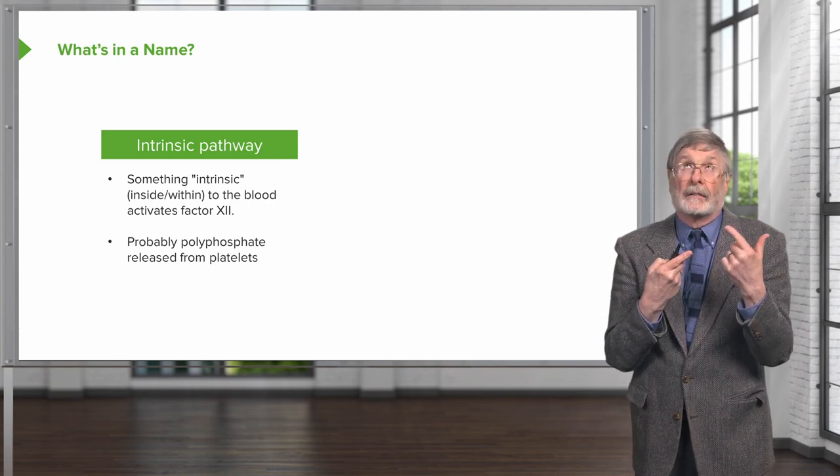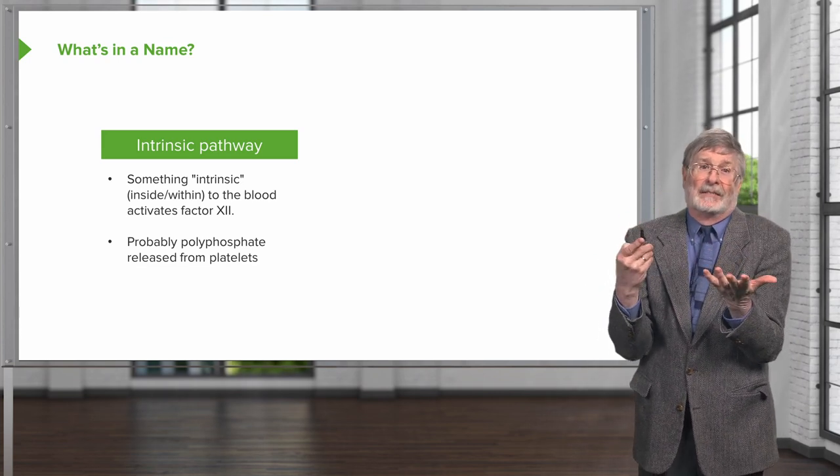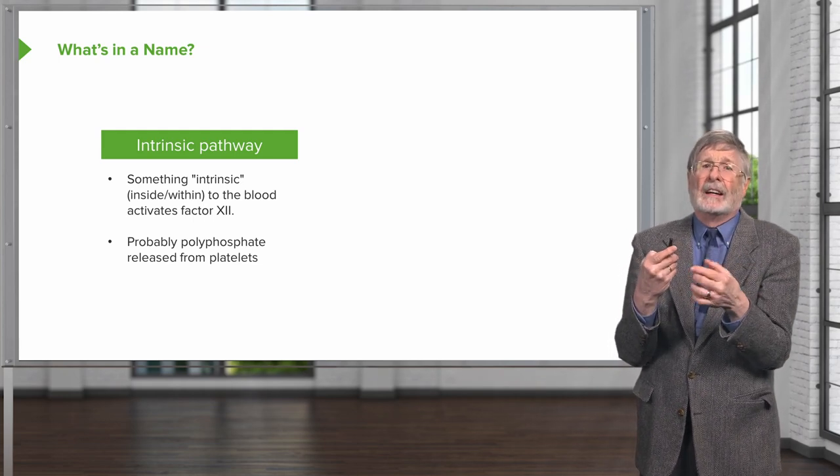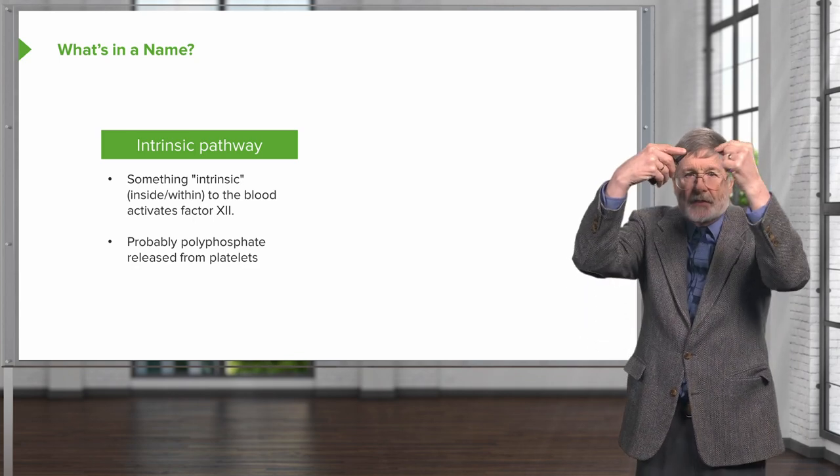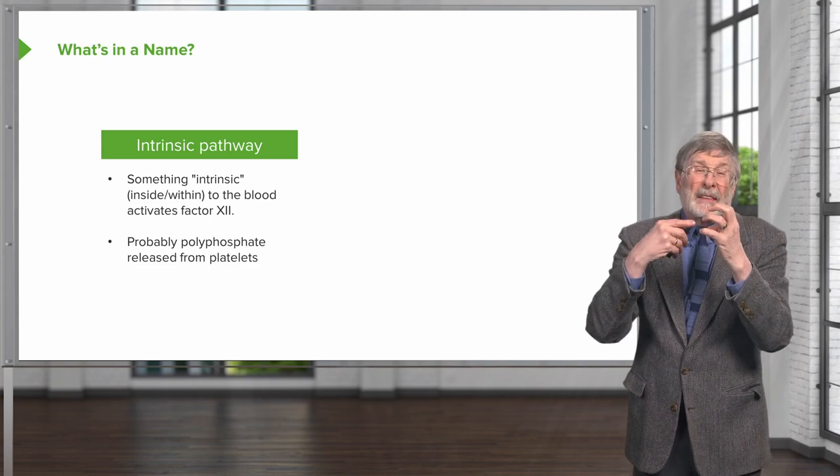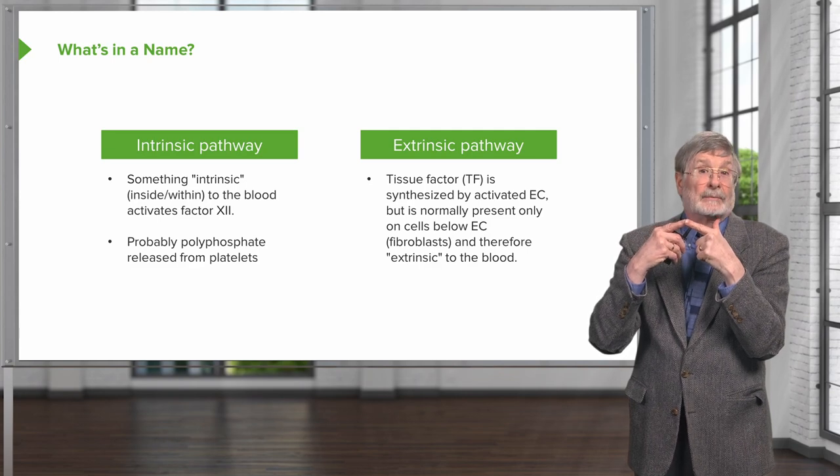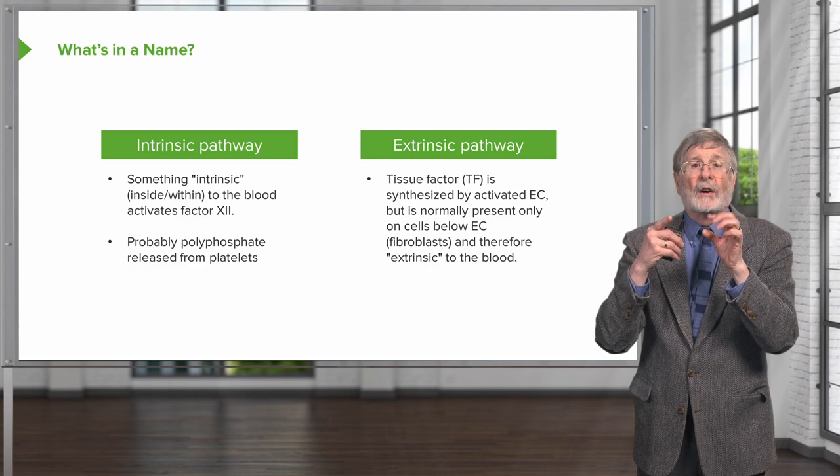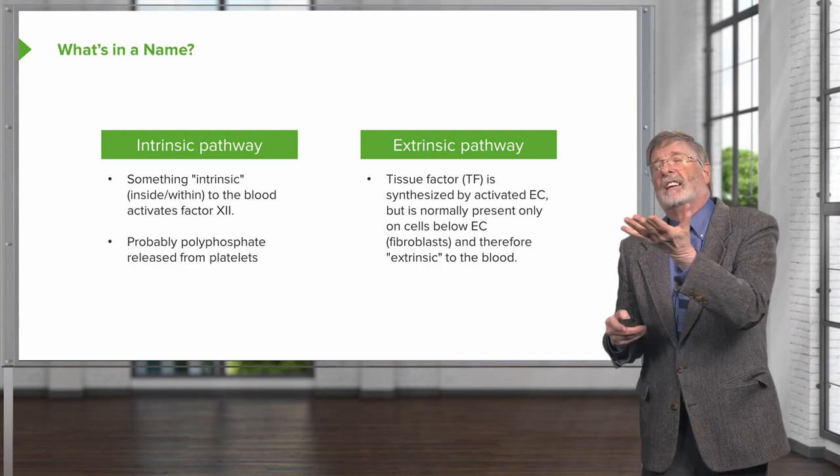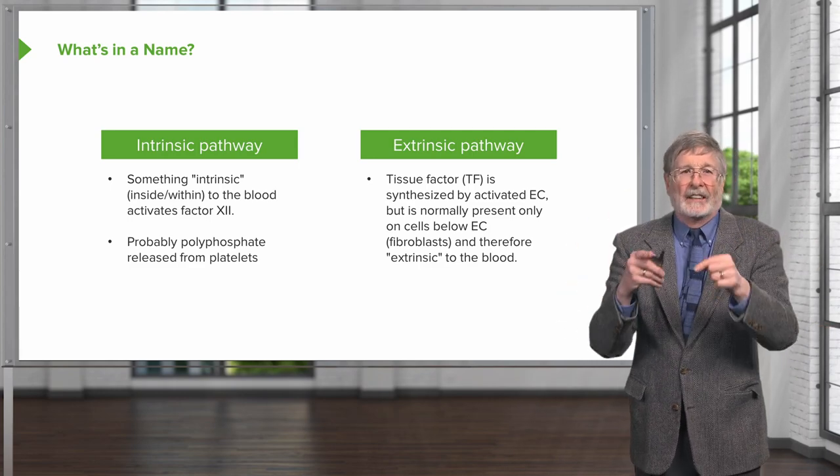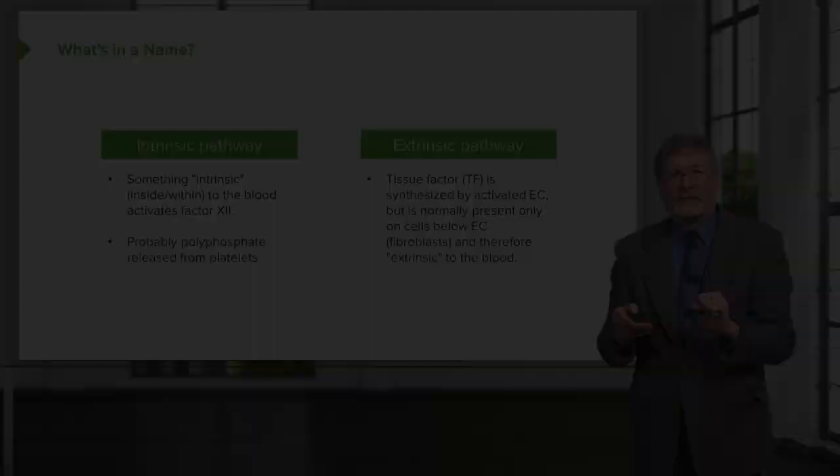What's in a name? Why do we call it the intrinsic pathway and the extrinsic pathway? In the intrinsic pathway, it's basically something that's intrinsic within blood that activates factor 12. It turns out it's probably negatively charged polyphosphate that's released onto the surface by activated platelets. So it was something intrinsic to the blood—this polyphosphate from platelets. The extrinsic pathway starts with tissue factor. Tissue factor is synthesized by activated endothelial cells, but it's also normally present only on the cells that sit below the endothelium, such as fibroblasts or smooth muscle cells, and is therefore extrinsic to the blood. Now you know. Hopefully that helps clarify how these various pathways intersect and why they are named.